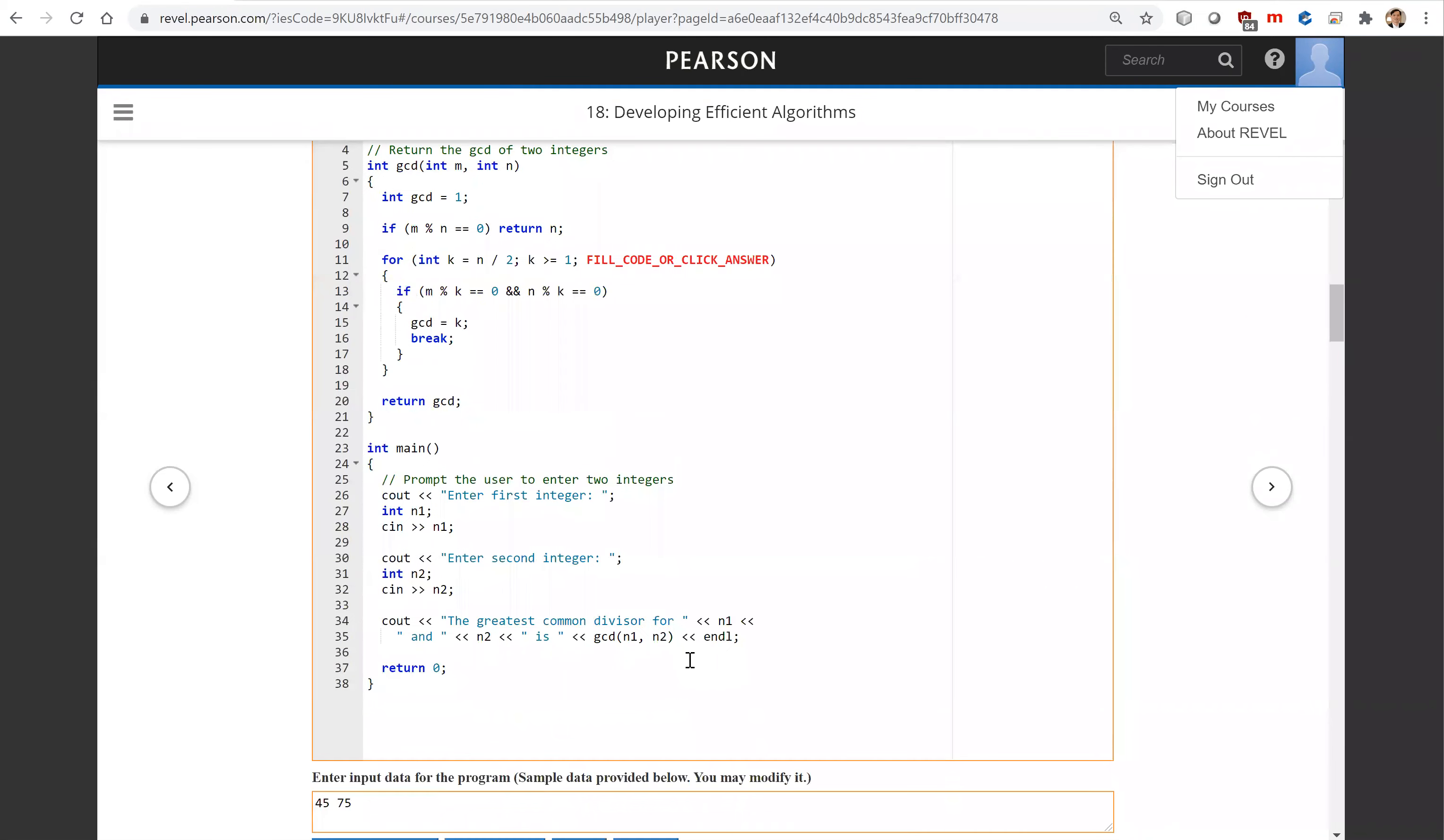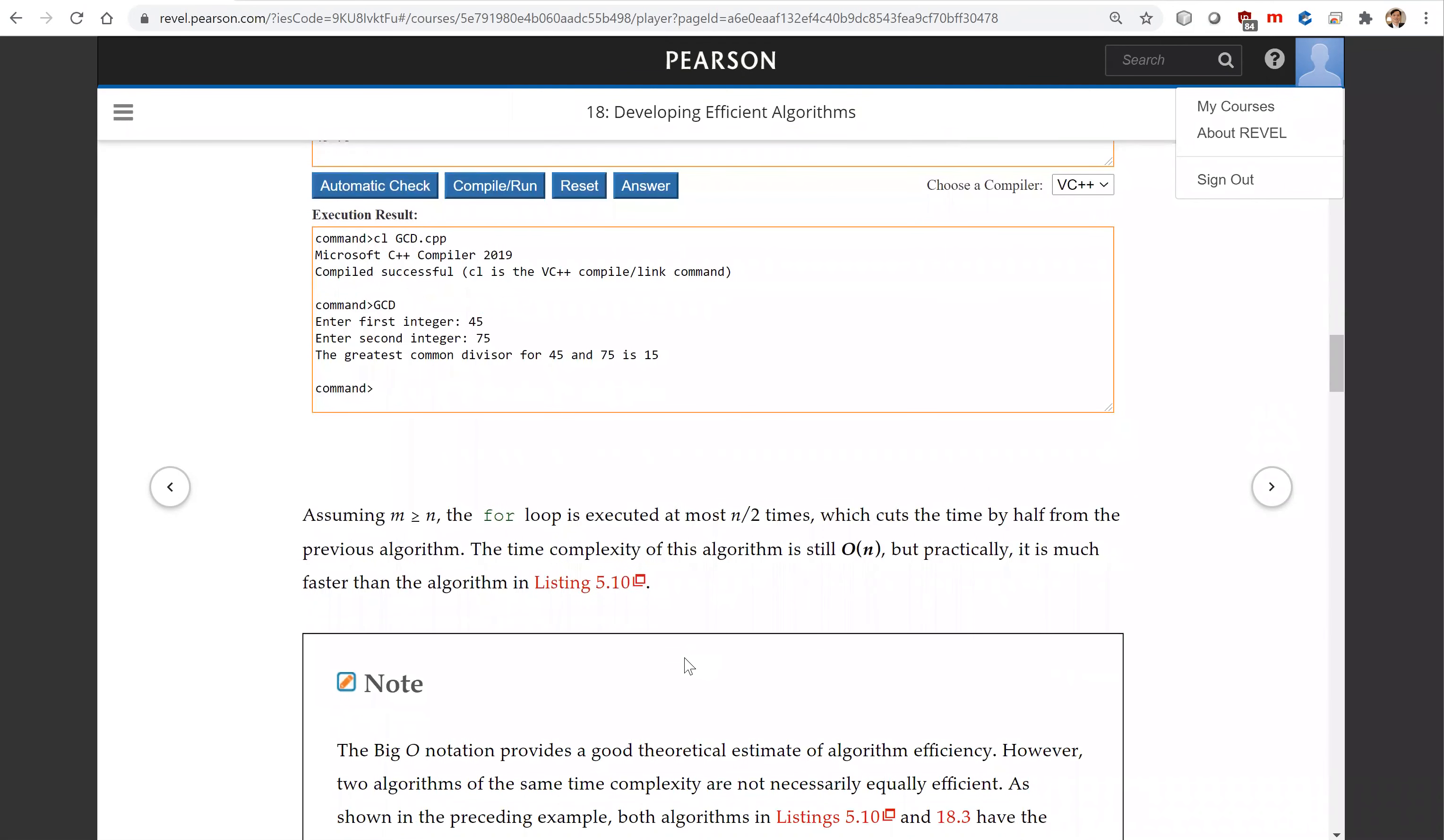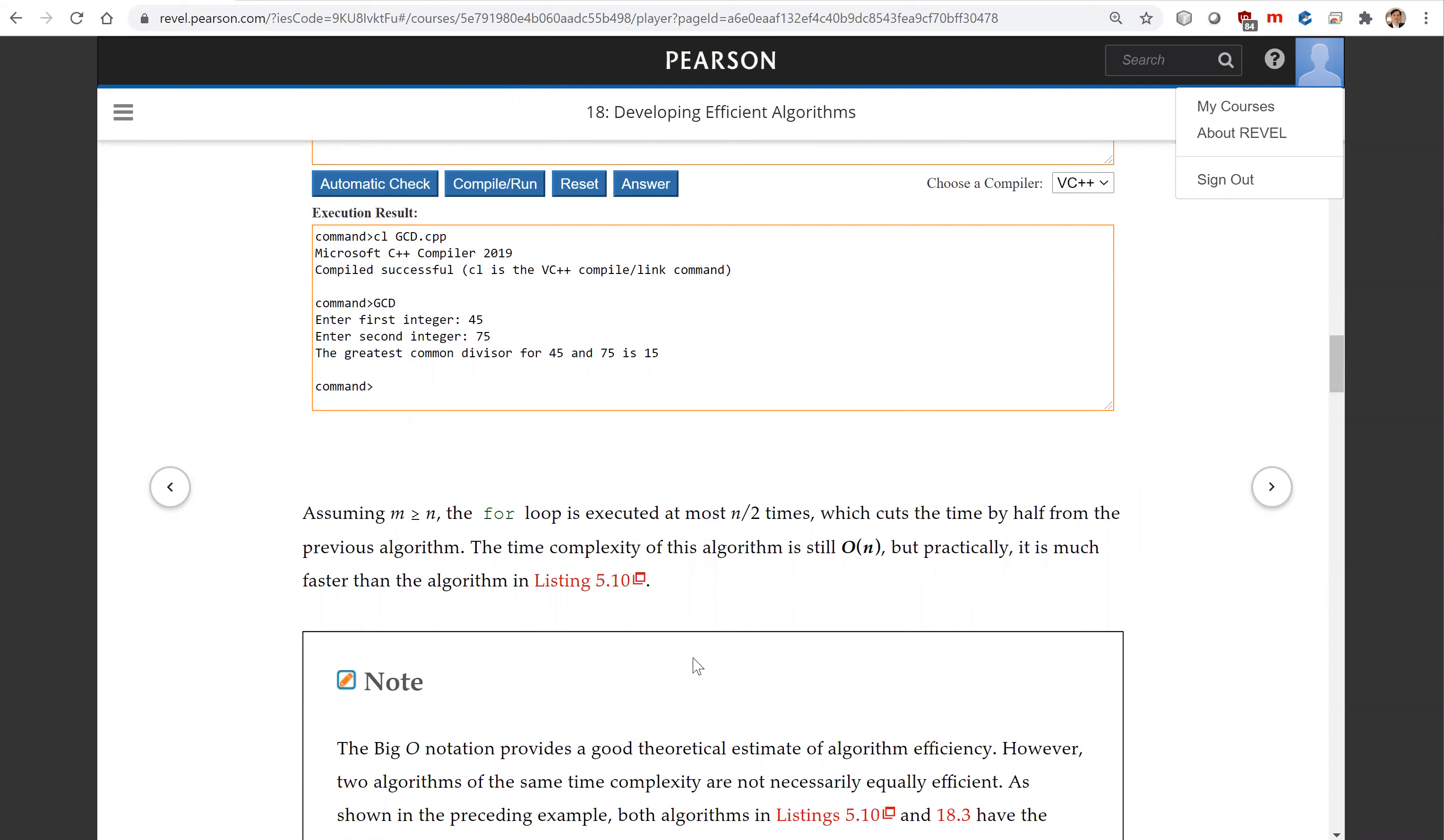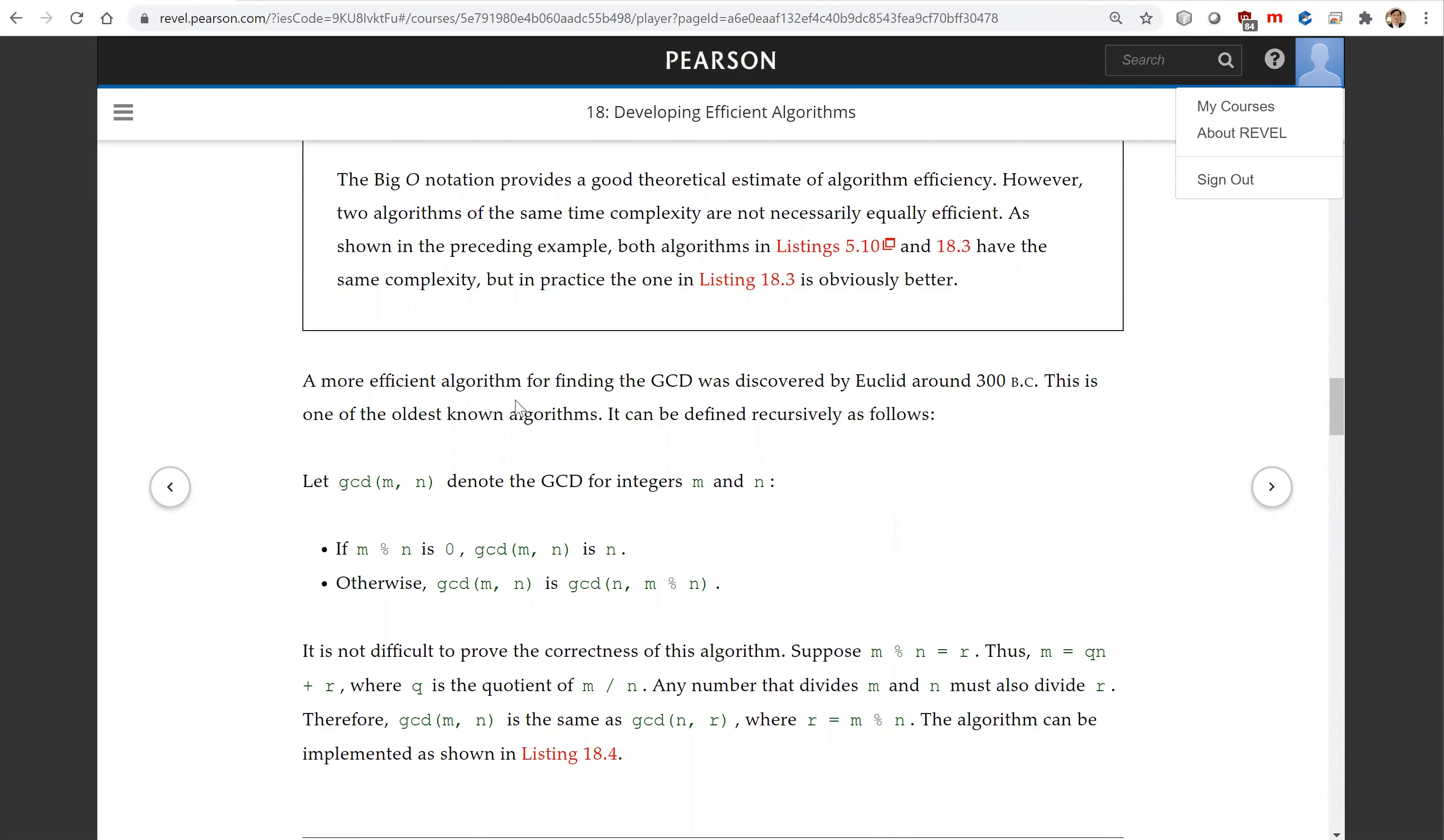Now we are going to look at a completely new algorithm called Euclid's algorithm. This is a very efficient algorithm. It is one of the oldest known algorithms and was discovered by Euclid around 300 BC.